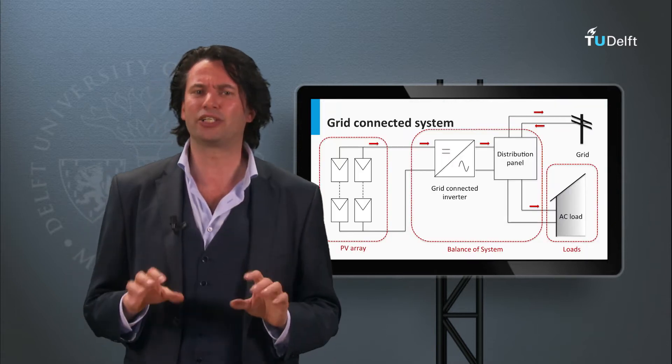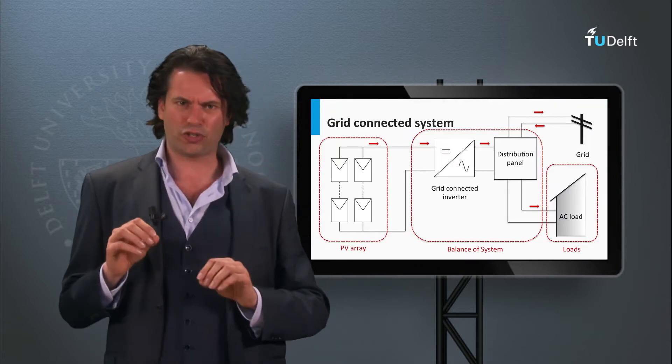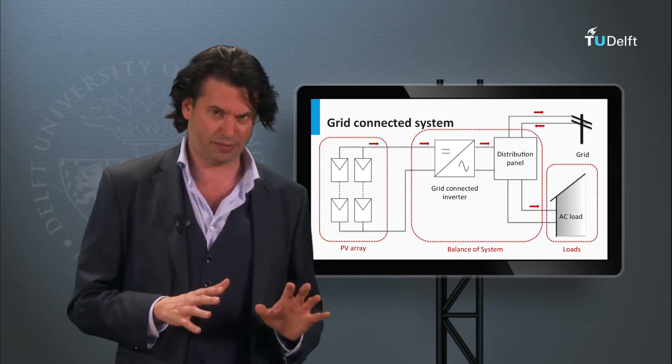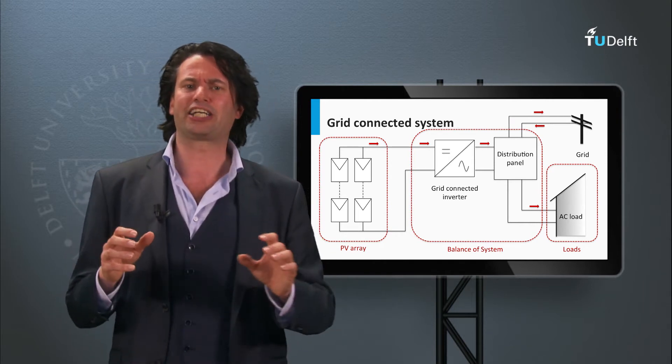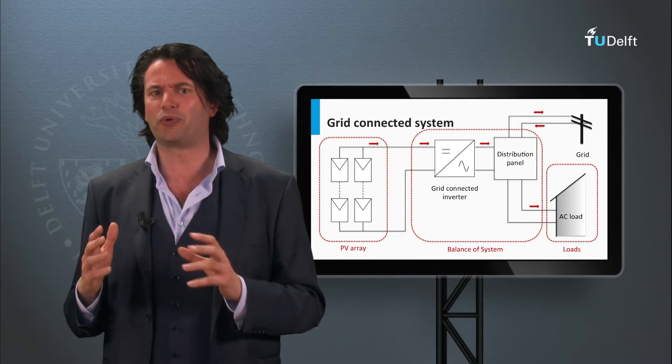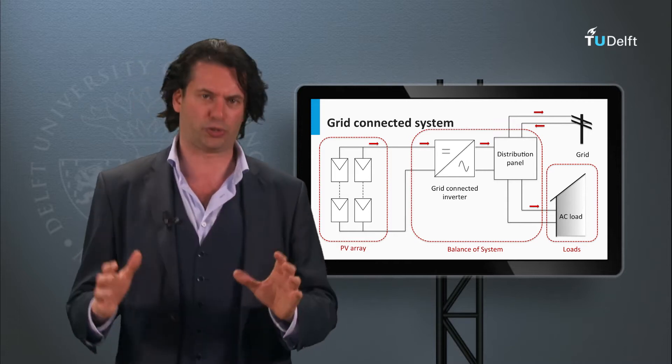As the name suggests, the grid-connected PV system is connected to the electric grid. There is a continuous exchange of power with the electric grid via the distribution panel.